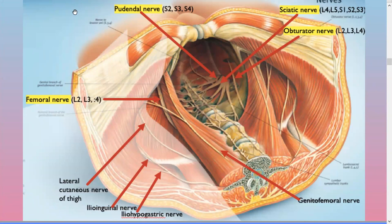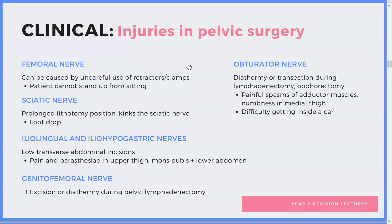Important nerves in the area also include the sciatic, obturator, and femoral nerves — you should absolutely know those and especially know their roots. Clinically: femoral nerve injury causes trouble standing up from sitting and can be caused by a surgical retractor. Sciatic nerve injury causes foot drop. Ilioinguinal and iliohypogastric nerve injury gives pain and paresthesia in the upper thigh and lower abdomen.